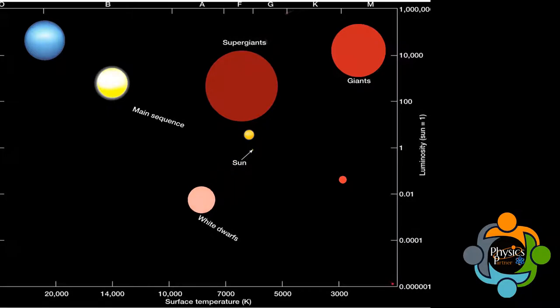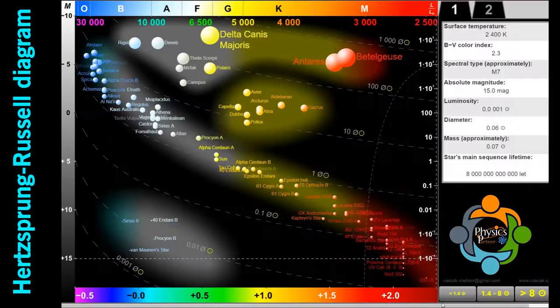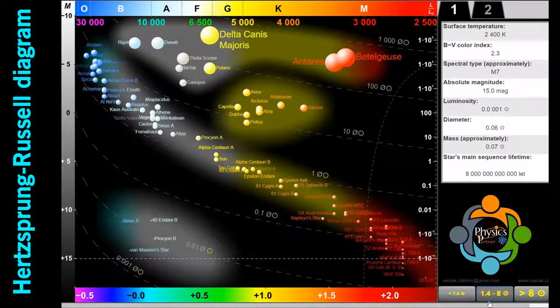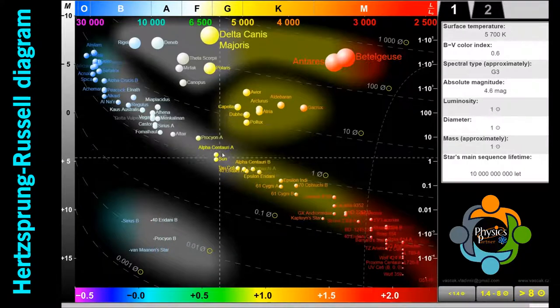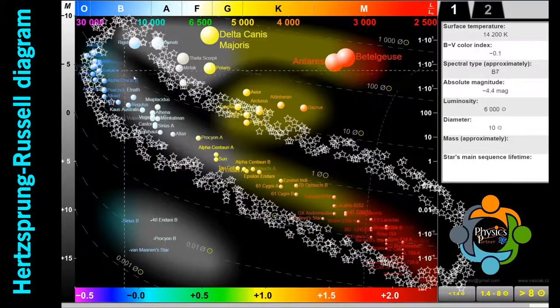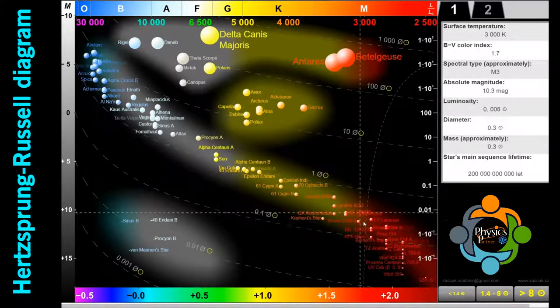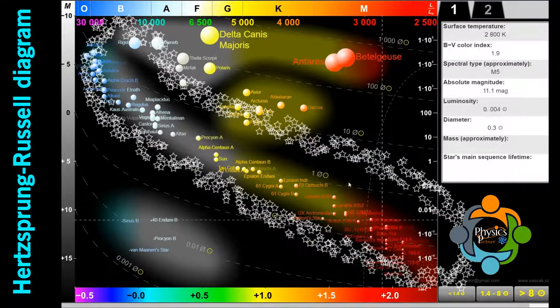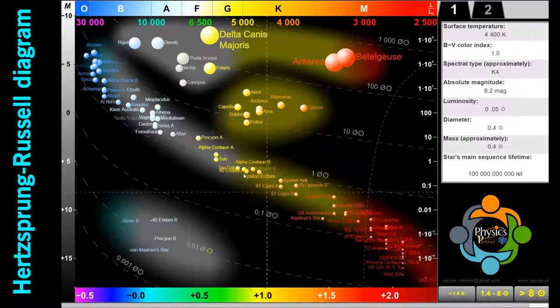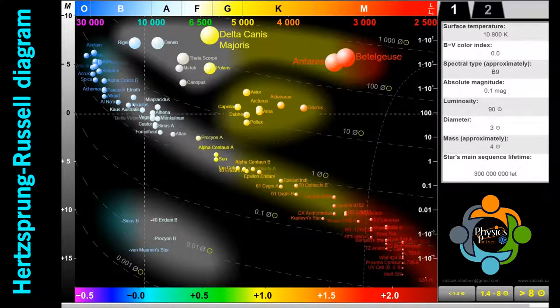Let's do an interactive activity about the HR diagram. This diagram on your screen shows a group of stars in various stages of evolution. By far the most prominent feature is the main sequence, which runs from the upper left - hot, luminous stars - to the bottom right - cool, faint stars.